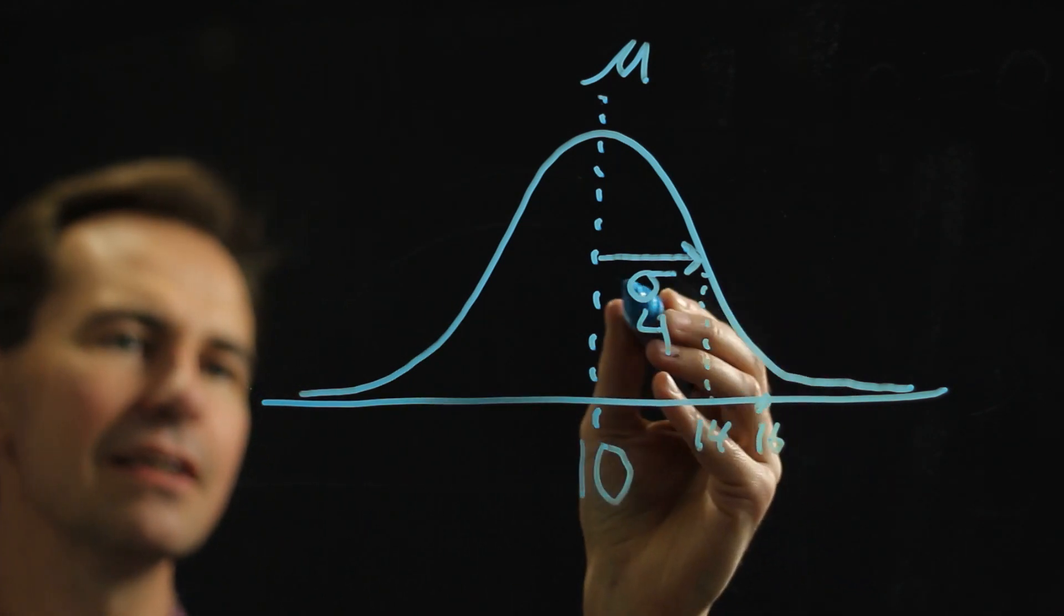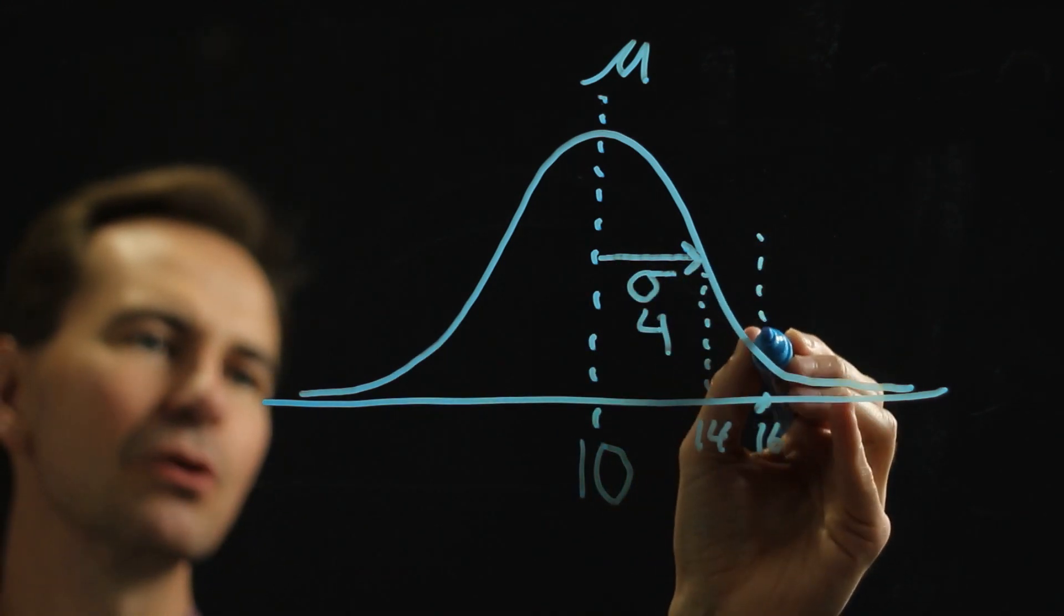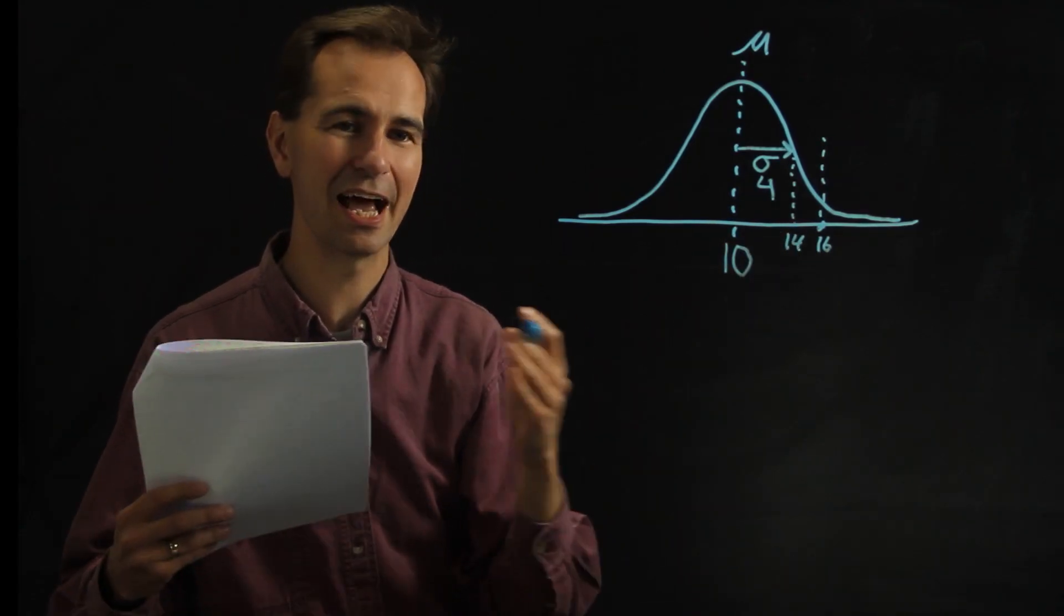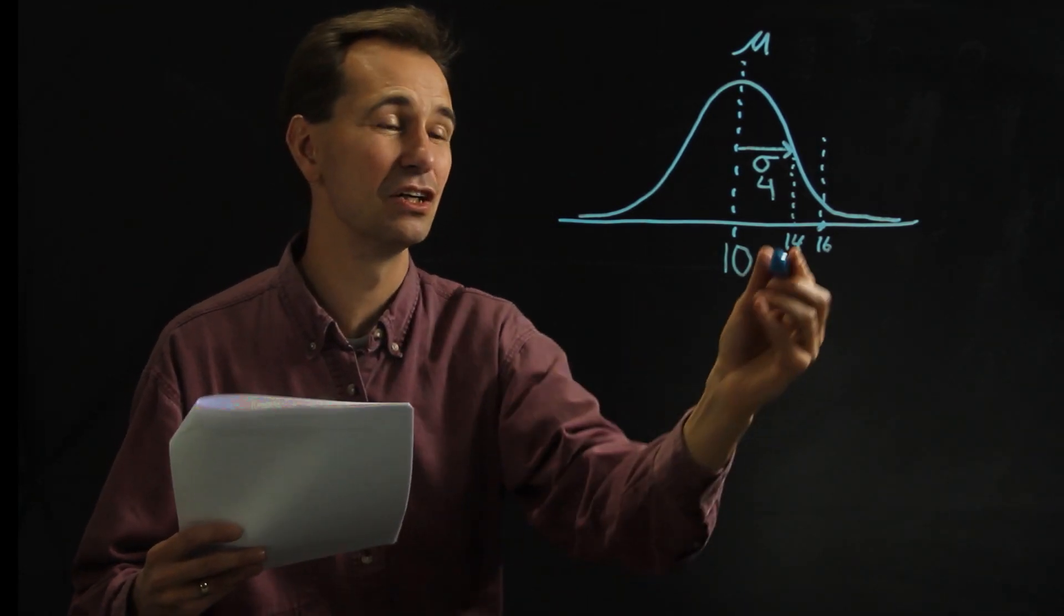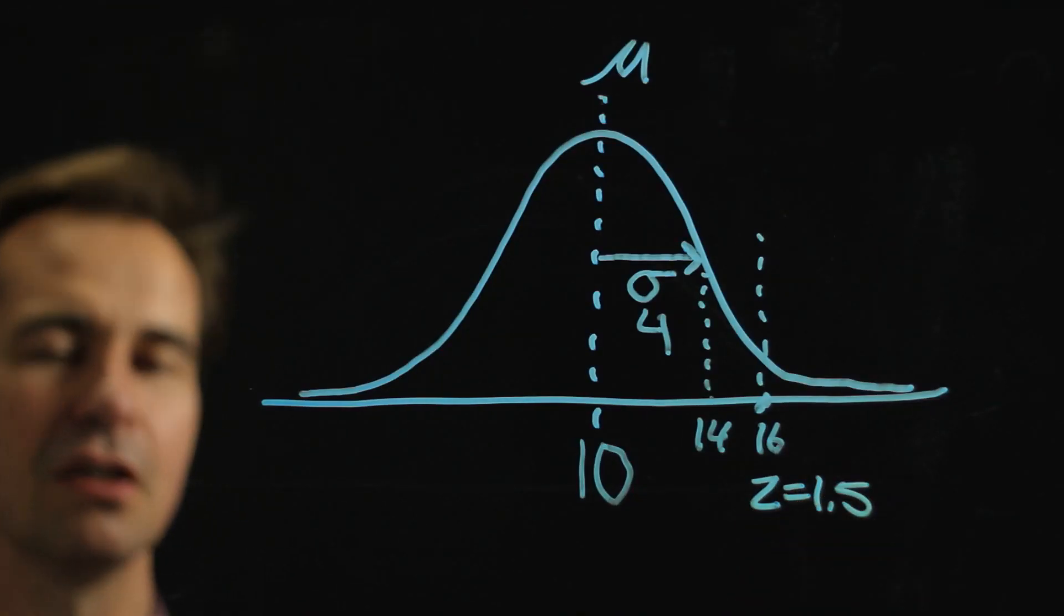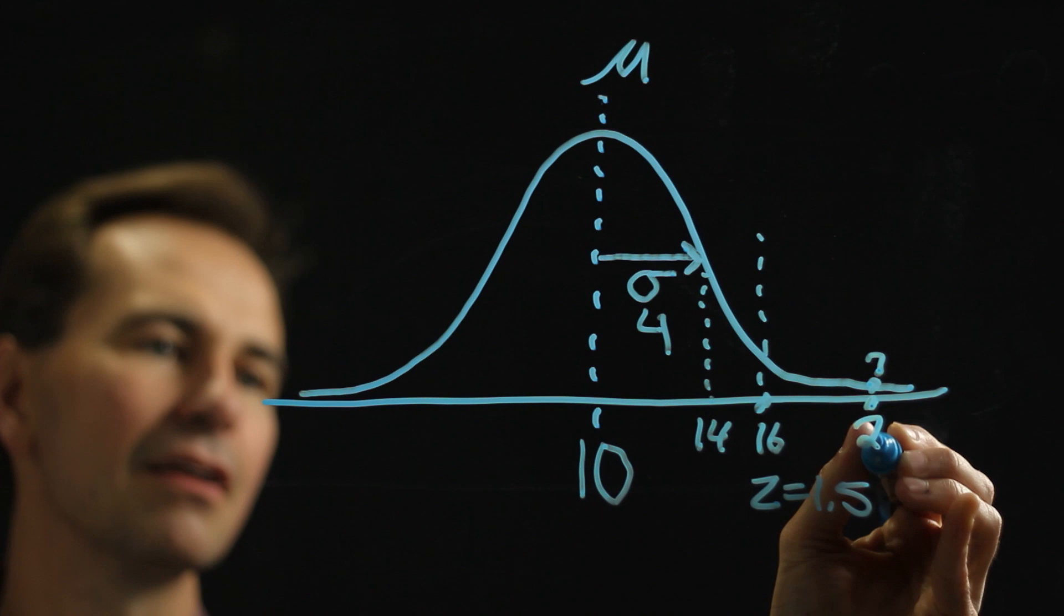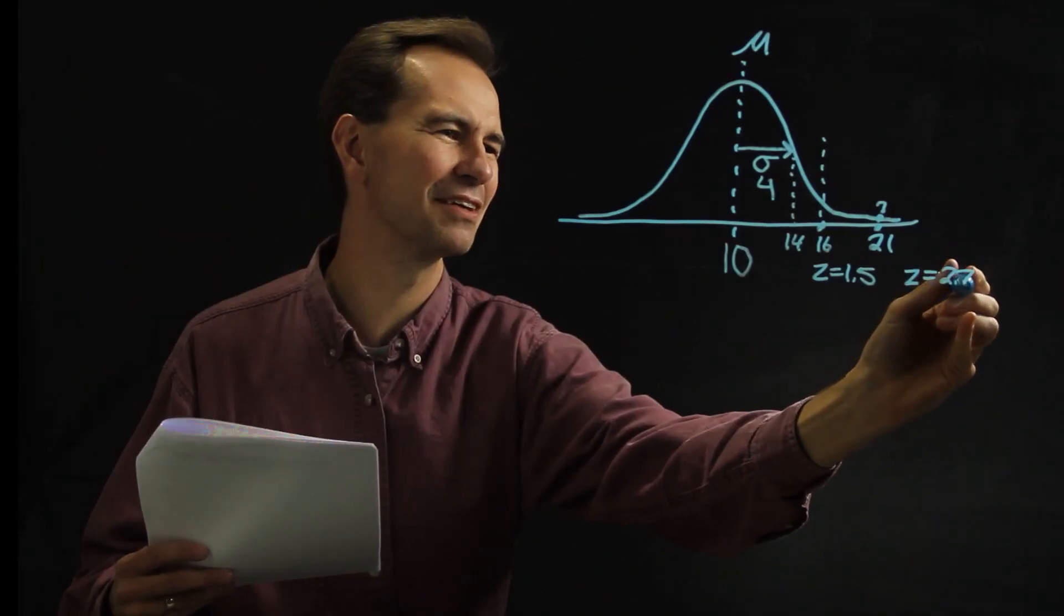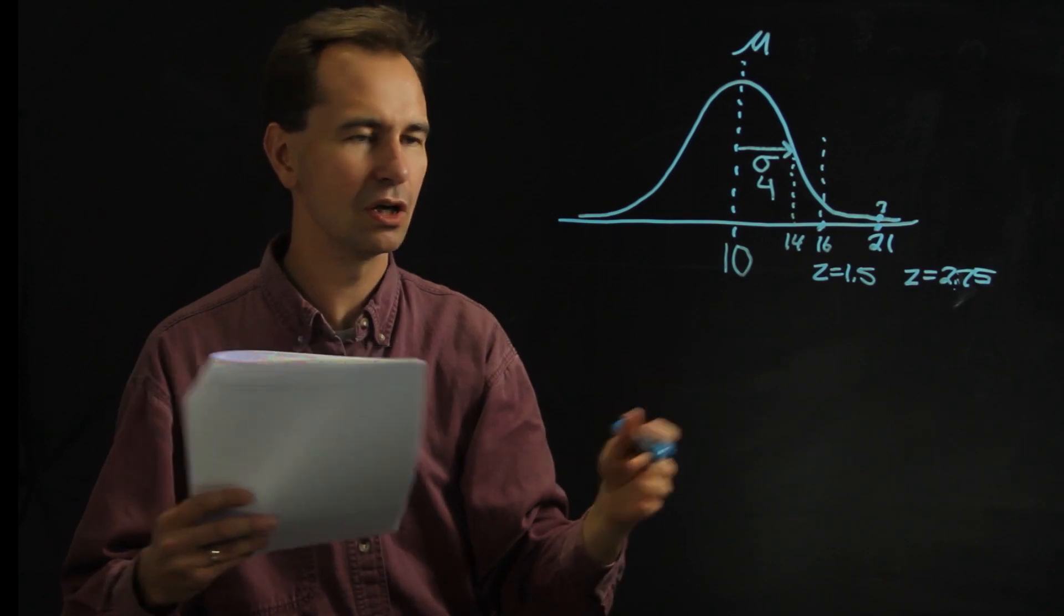So 16 is one standard deviation plus a half a standard deviation away from the middle. So that's what we mean by the z-score of a number. It's how far a point is away from the middle of the Gaussian distribution. So for this point right here, z is 1.5. If you have another point, say, like 21, that's a lot further away from the mean, and it turns out that z is 2.75.